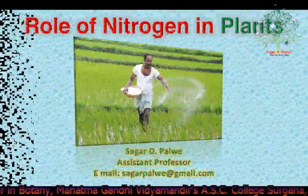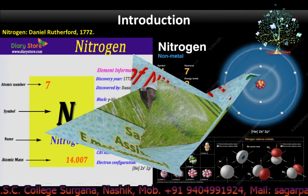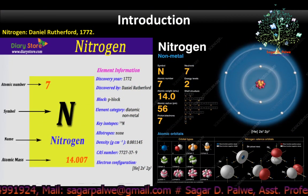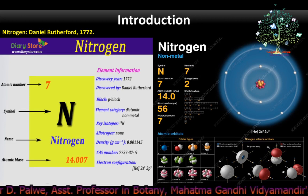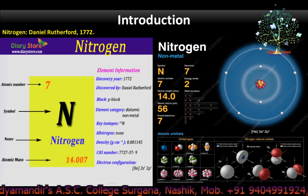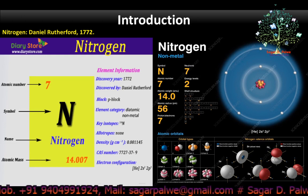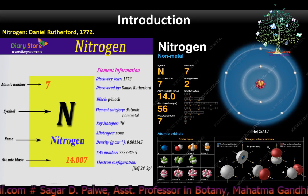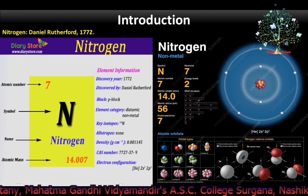Hello everyone, today we are going to see the topic: role of nitrogen in plants. The element nitrogen was discovered as a separable component of air by Scottish physician Daniel Rutherford in 1772. Nitrogen compounds were well known during the Middle Ages; alchemists knew nitric acid as aqua fortis, meaning strong water. The mixture of nitric acid and hydrochloric acid was known as aqua regia, meaning royal water.